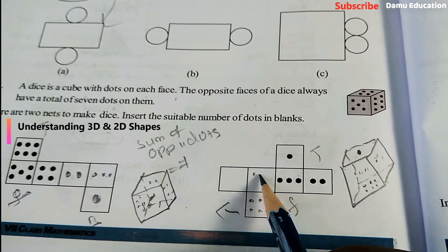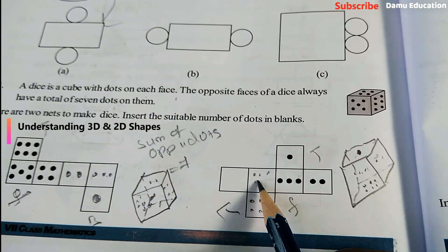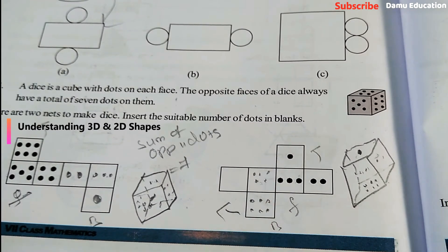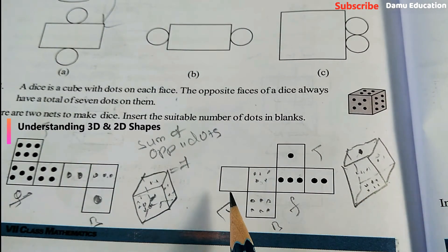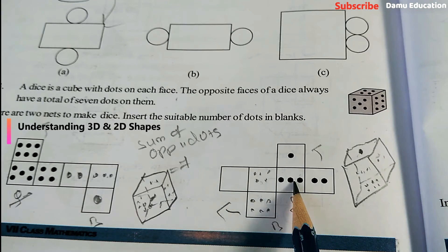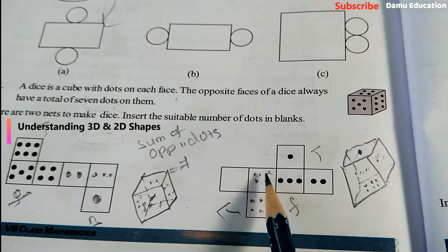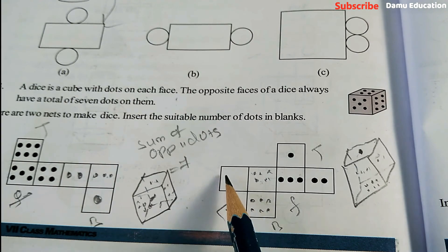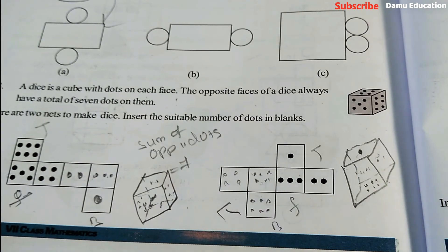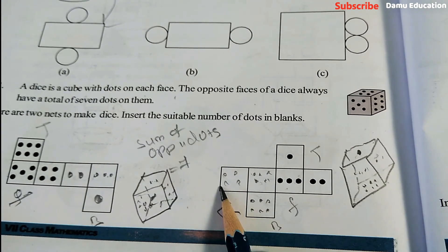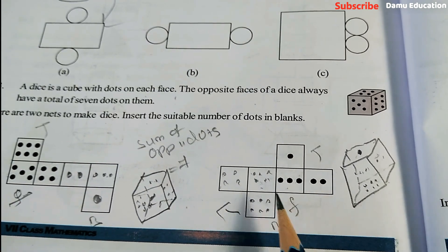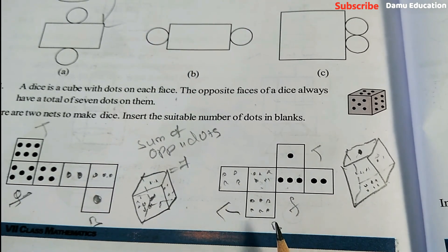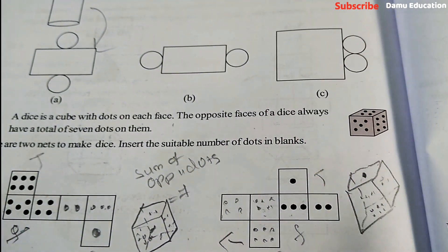For this opposite it will come as this one. What is this? 5 dots. Again, this one will come as, for the opposite 3 will be there, so 4. So 3, for this opposite is this one. Like that we need to solve. Thanks for watching this video. Please subscribe to Damu Education. See you guys.